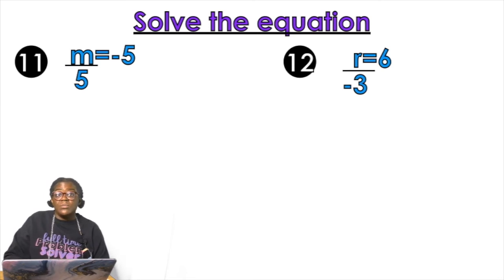And now we have division problem. So m over five. How do I get rid of division? I multiply. So we're going to multiply by five, five. M equals negative 25.